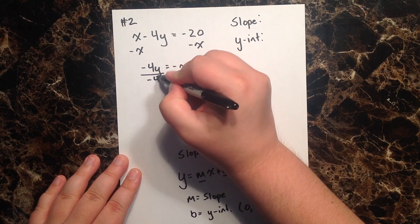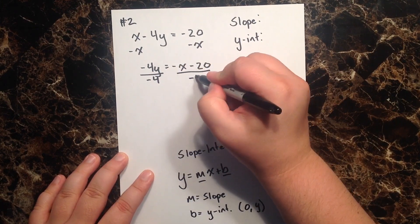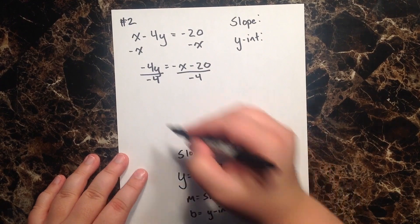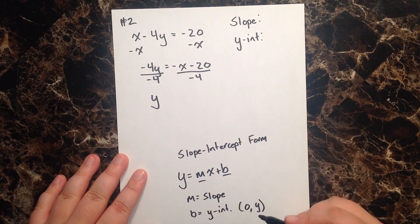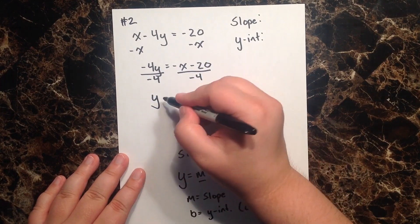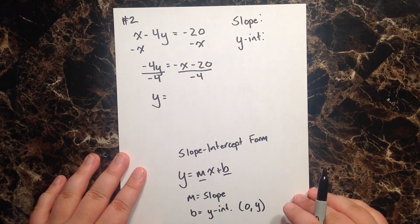I'm going to go ahead and divide by negative 4 on both sides, so that I can isolate my y on the left, and then on the right, I'm going to have,